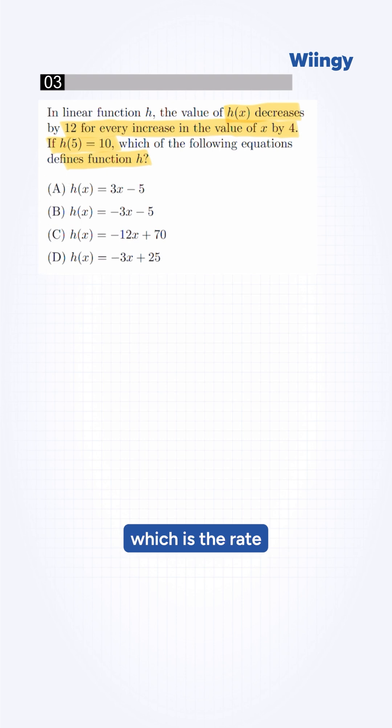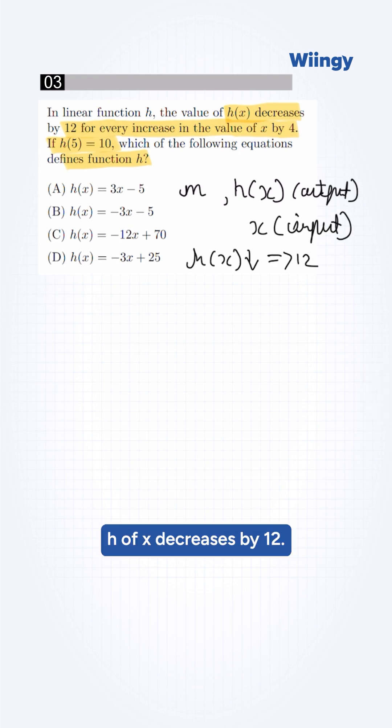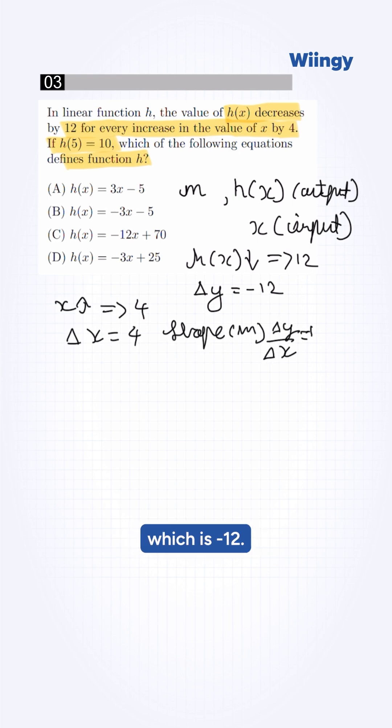To find the correct slope, which is the rate of change, slope m is the ratio of change in h(x) output to the change in x input. h(x) decreases by 12, so Δy = -12. And x increases by 4, so Δx = 4. Slope m is Δy/Δx, which is -12/4 = -3.